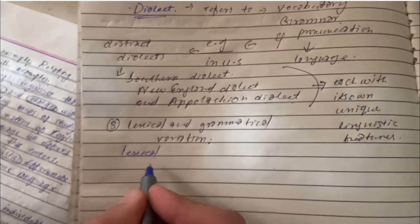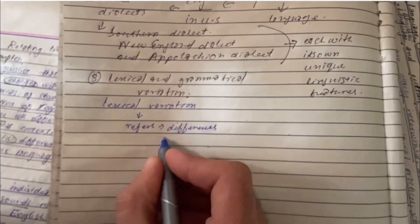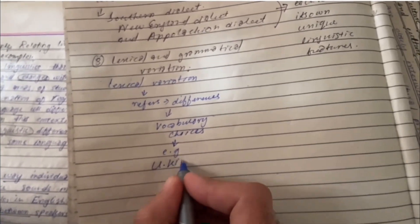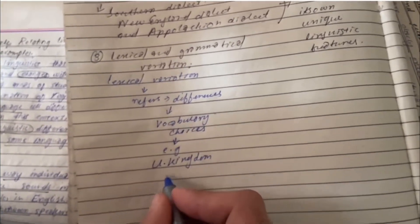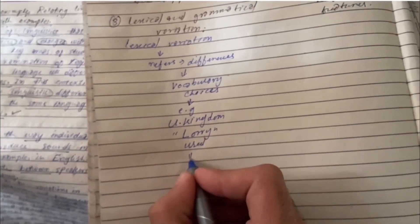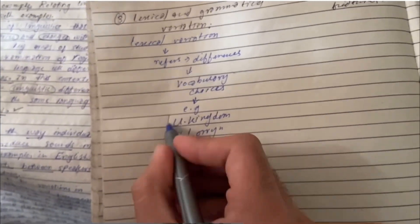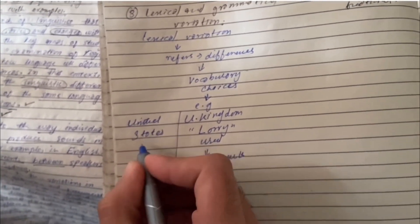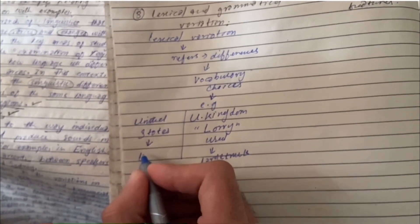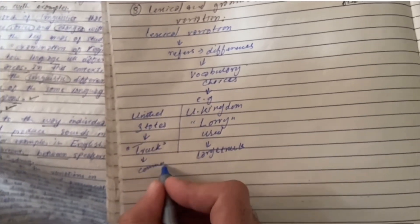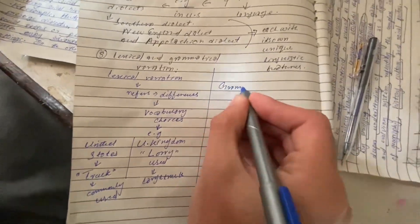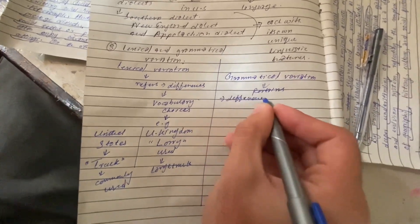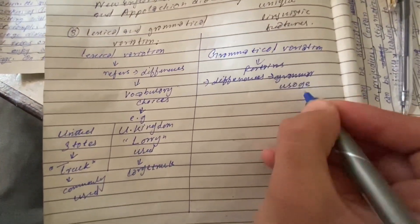Thirdly, lexical variation refers to differences in vocabulary choices across regions. For example, in the United Kingdom the word 'lorry' is used to refer to a large truck, while in the United States the term 'truck' is more commonly used.